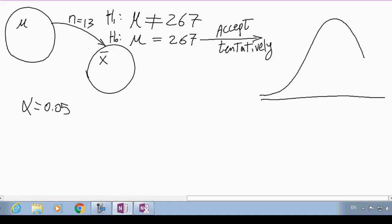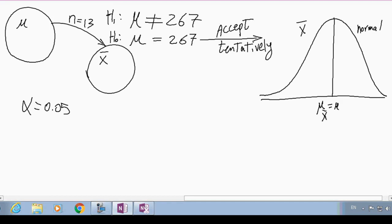The sample mean, we know that has a normal distribution based on central limit theorem, and the mean of all of the sample means is the mean of the population, and the standard deviation of all of the sample means is the standard deviation of the population divided by square root of n. Now, based on our tentative acceptance of the null, we have accepted that the mean is 267. Therefore, all of the things that we are writing here is now based on that acceptance, 267.